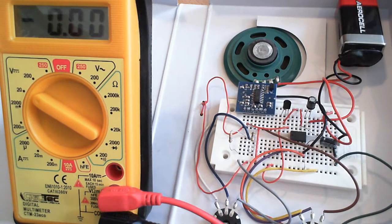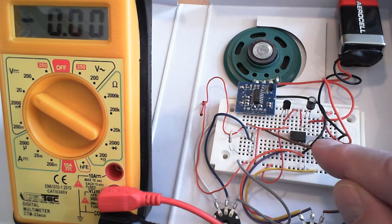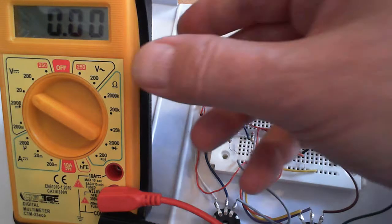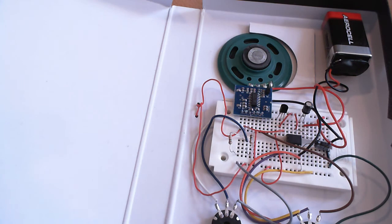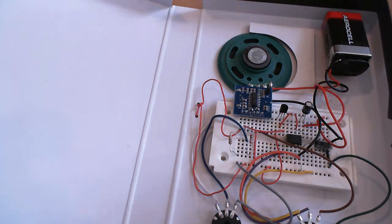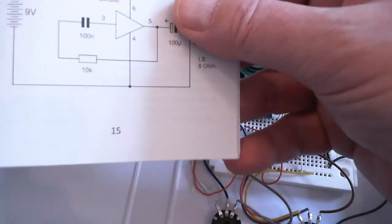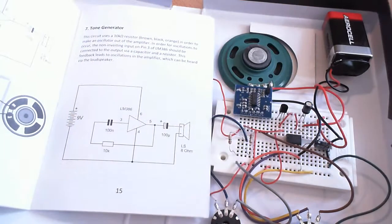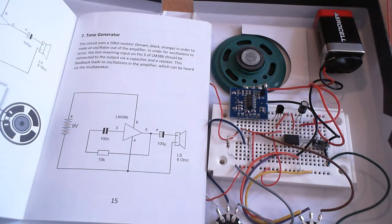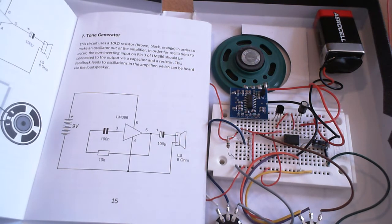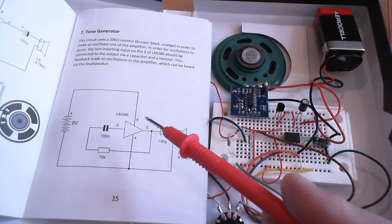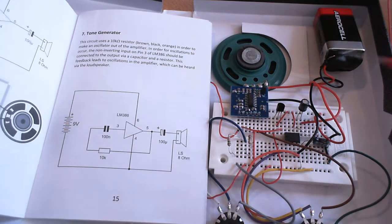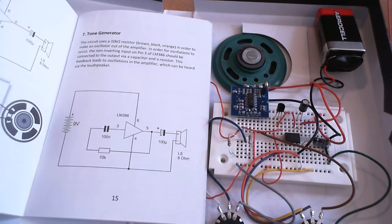Now, I can try if the amplifier is working at least. Let me take off the meter and I go back to an early experiment. A tone generator is made up of feedback from the output to the input at pin number 3. So, let me try to build this.